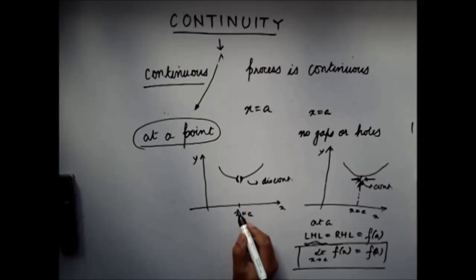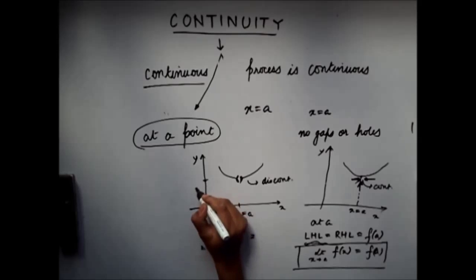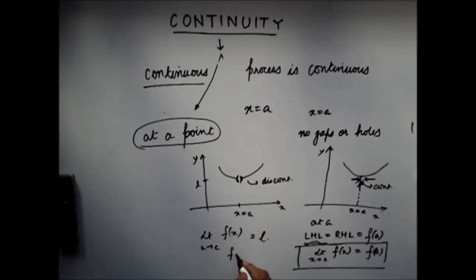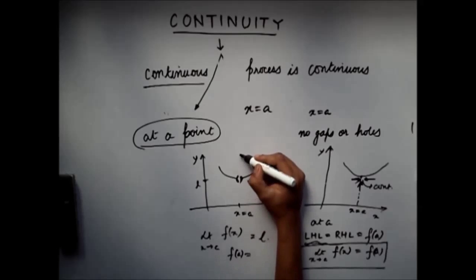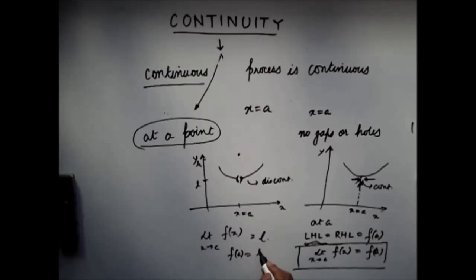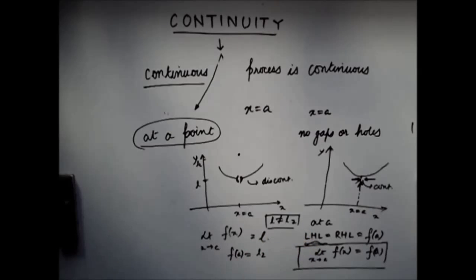For the discontinuous function, as you can see, though the limit exists at a particular value L, the functional value at a is something different — let's say it's L2. So though the limit exists, it is not equal to the functional value at a. Therefore, we can say that the function is not continuous at point x equals a.